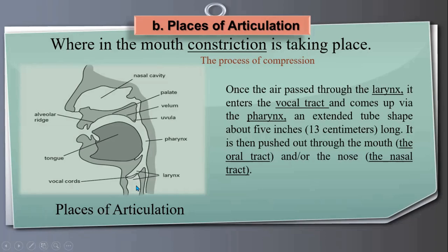Once air passes through the larynx, it enters the vocal tract — a narrow passage. It comes up via the pharynx, an extended tube-shaped passage about five inches (13 centimeters) long, and is then pushed out through the mouth via the oral tract or the nasal tract. These are the places where sounds are articulated.